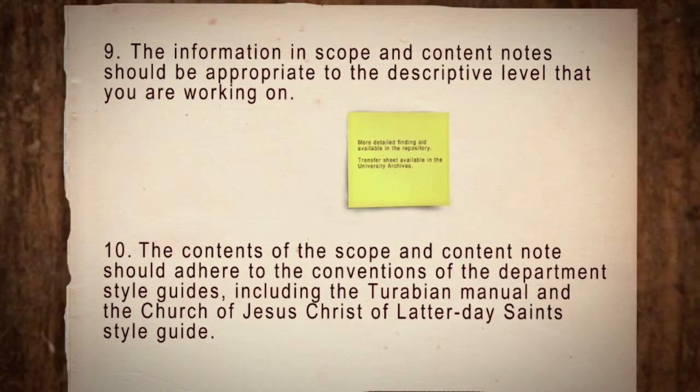The information in scope and content notes should be appropriate to the descriptive level that you are working on. If you are at the collection level, then the scope and content note should describe the collection as a whole. If you are at the series level, then the scope and content note should only describe that series. Similarly, at the sub-series level, the scope and content note should only describe the sub-series.